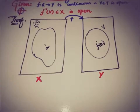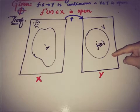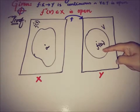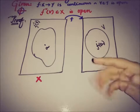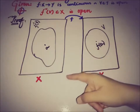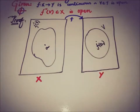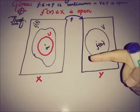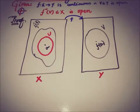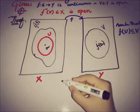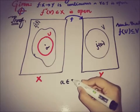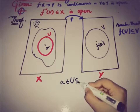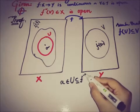By using the definition of continuity: for each open V in Y that contains f(a), there exists an open set U in X such that U contains the point a, and the image of U, f(U), is a subset of V. So we can write that a belongs to U and U is a subset of f⁻¹(V).